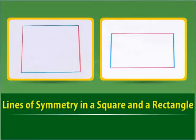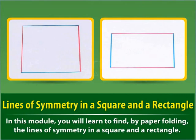Lines of symmetry in a square and a rectangle. In this module you will learn to find by paper folding the lines of symmetry in a square and a rectangle.